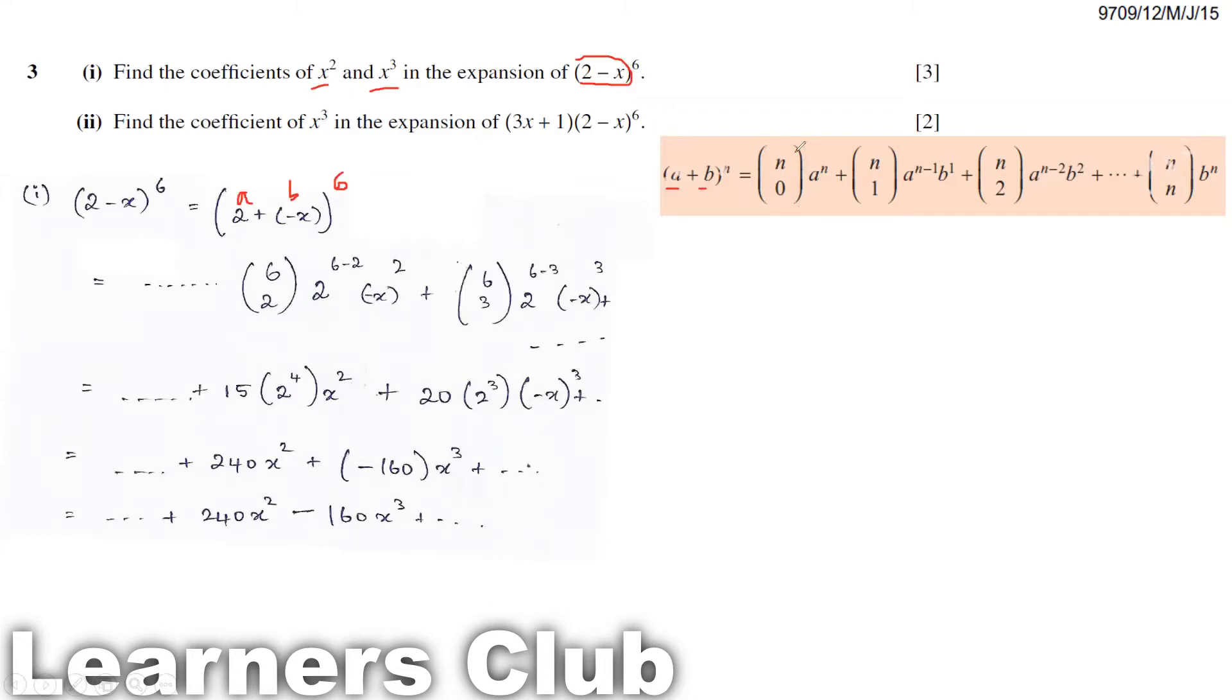Now you can see, comparing this equation, 2 is my a and b is going to be minus x. I want my r to be of 2 and 3, so we'll be using this one first. My n value here is 6 because n is the power, and this is 2.